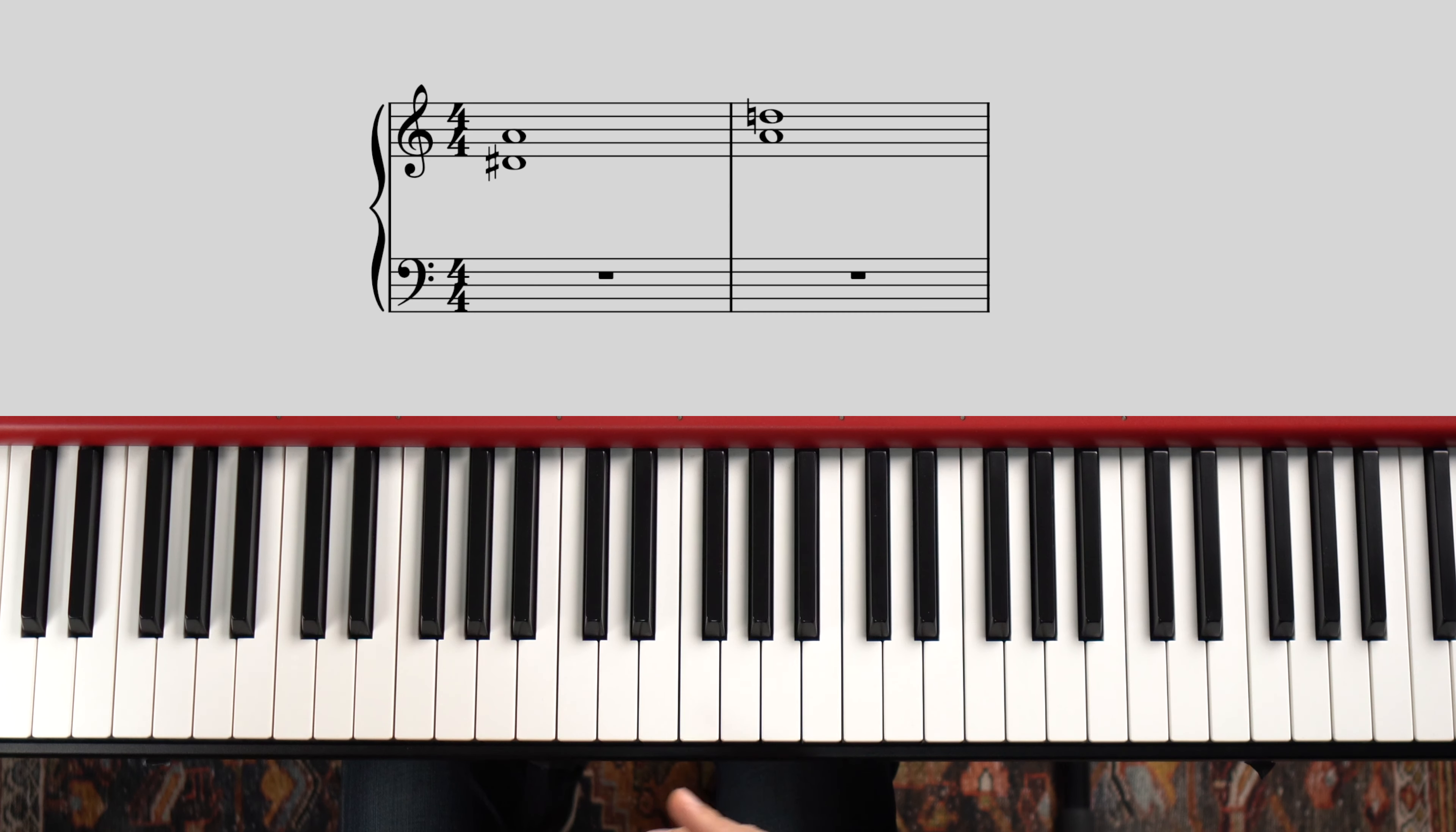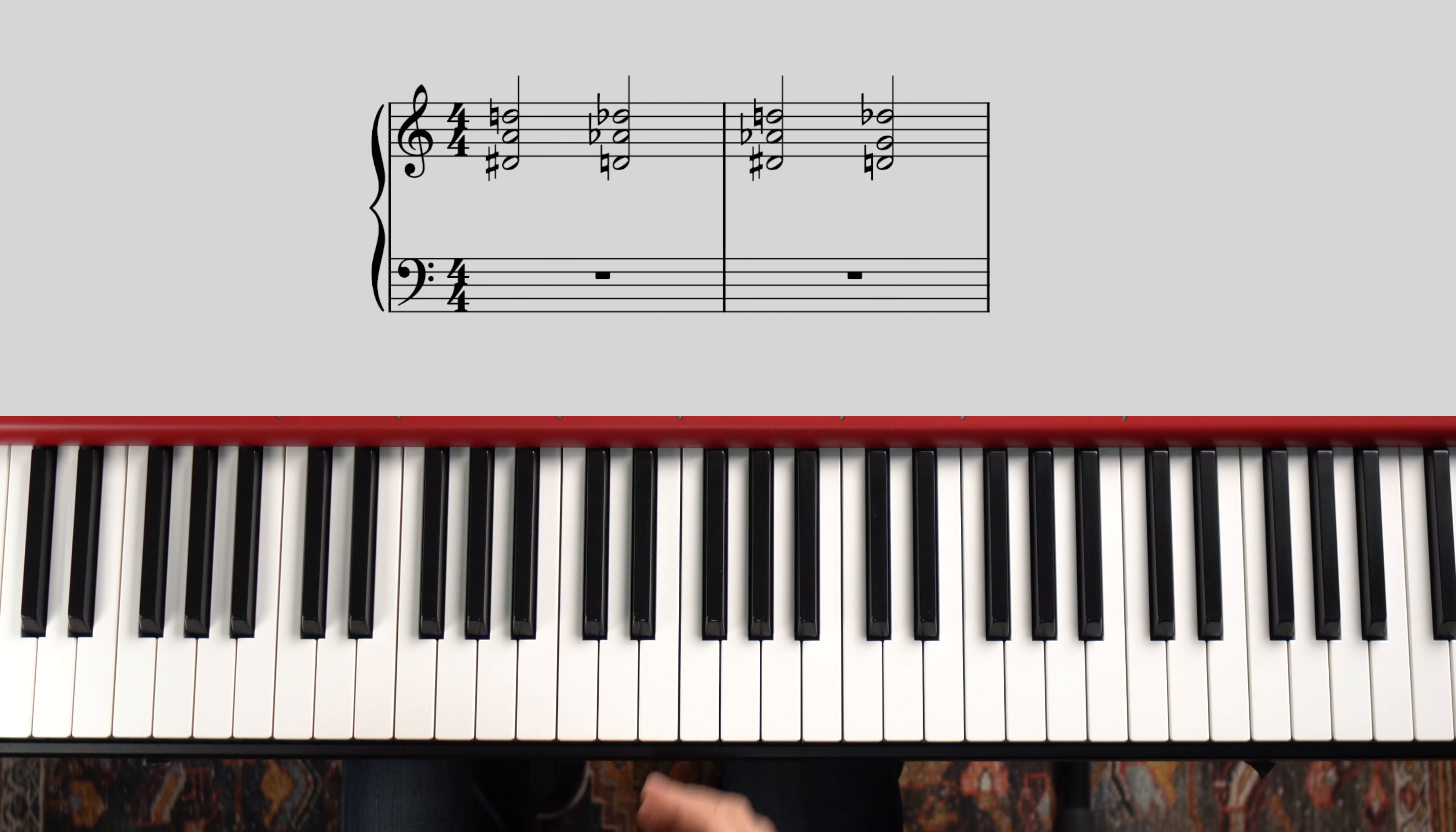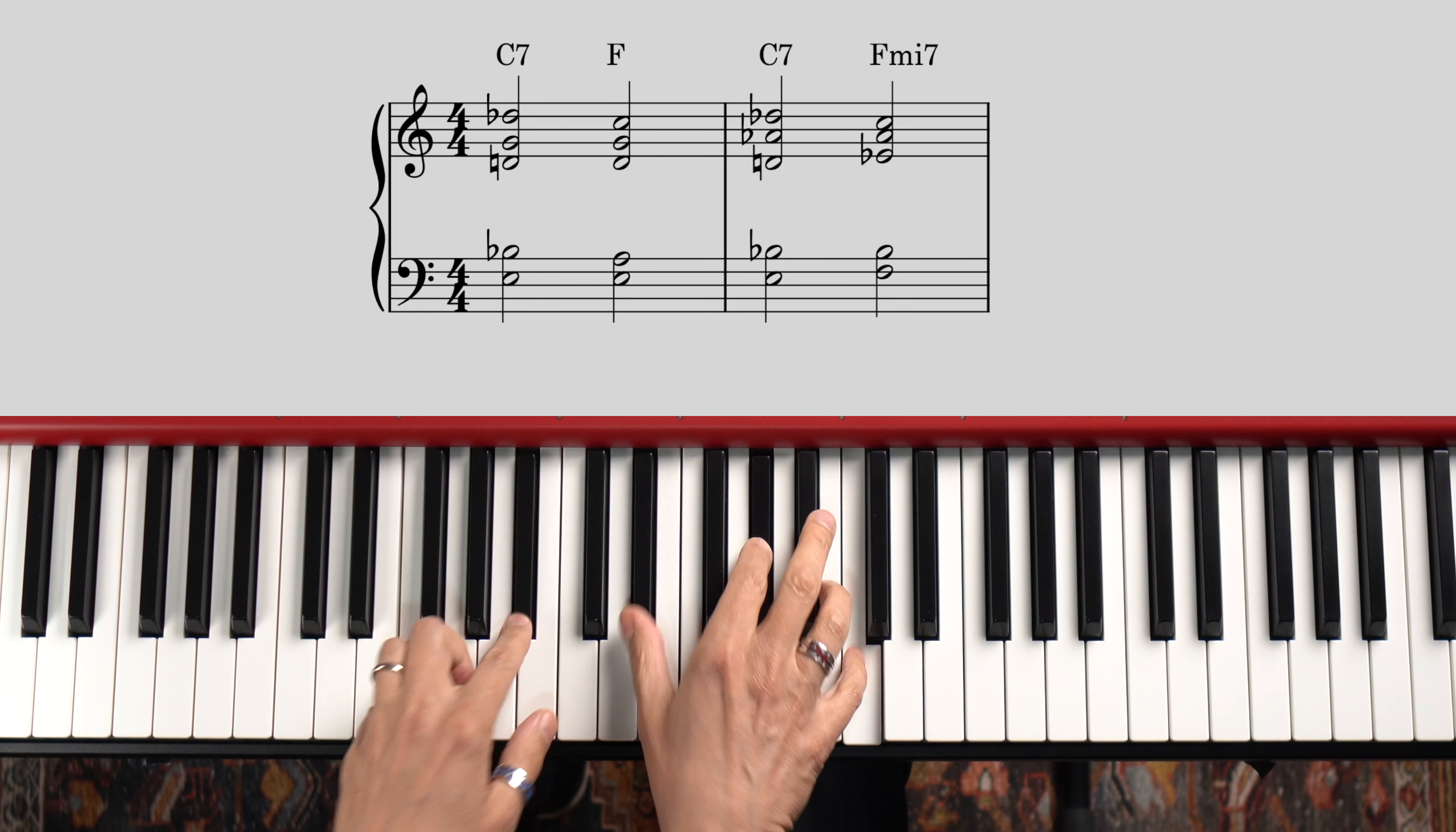Another thing I can do is take either of my right hand shapes and move them down a half step. Now, instead of the crime of using both sharp 9 and natural 9 in my voicing, I'm committing the closely related crime of using both natural 9 and flat 9. And once again, if I resolve convincingly to F major, or minor, I've created an awesome pattern of dissonance and consonance, which is what music is all about. An intricate dance between the two.